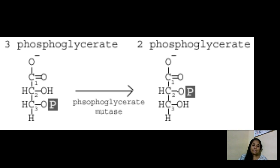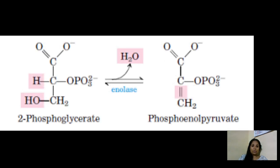The next step converts 3-phosphoglycerate into 2-phosphoglycerate: the phosphate group on the third carbon is transferred to the second carbon, catalyzed by the enzyme phosphoglycerate mutase. After that, one molecule of water is removed from 2-phosphoglycerate by the enzyme enolase, producing phosphoenolpyruvate (PEP).